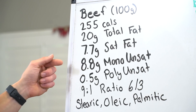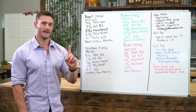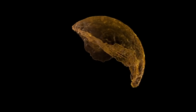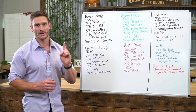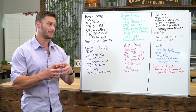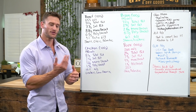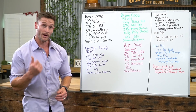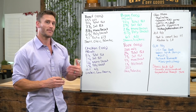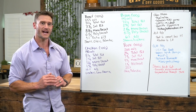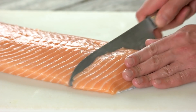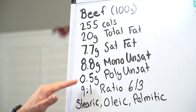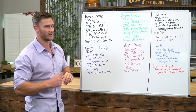Beef has 8.8 grams of monounsaturated fat. Monounsaturated fat only has one bond not totally bound by hydrogen, making it a liquid fat that's very stable. It only has one area where it can become oxidized. Polyunsaturated fats, by contrast, have multiple open bonds — they're very fragile, go rancid easily, undergo lipid peroxidation, and break down when cooked. So you want lower polyunsaturated and higher monounsaturated. Beef has 8.8 monounsaturated and only 0.5 grams of polyunsaturated — a very good ratio.